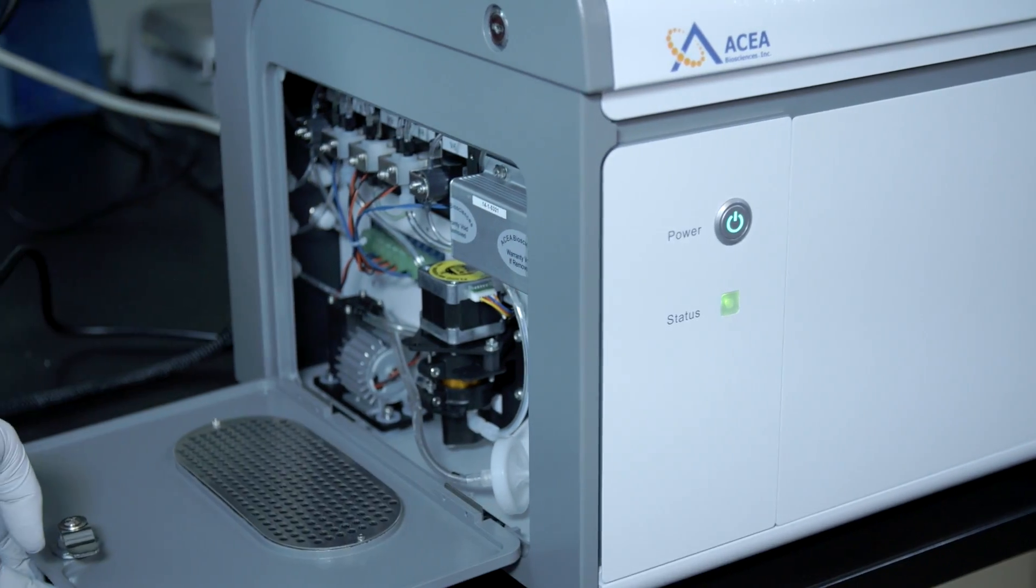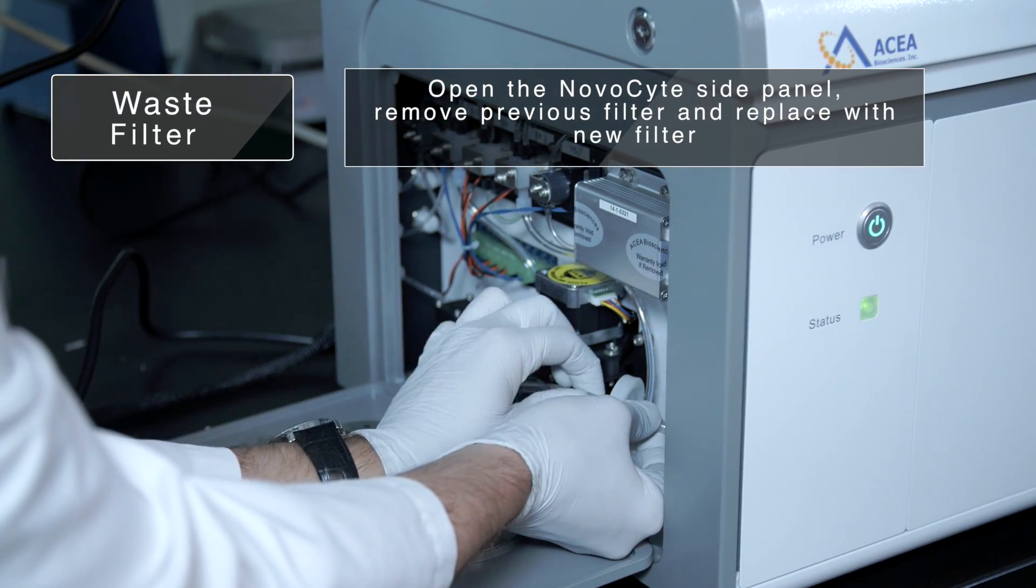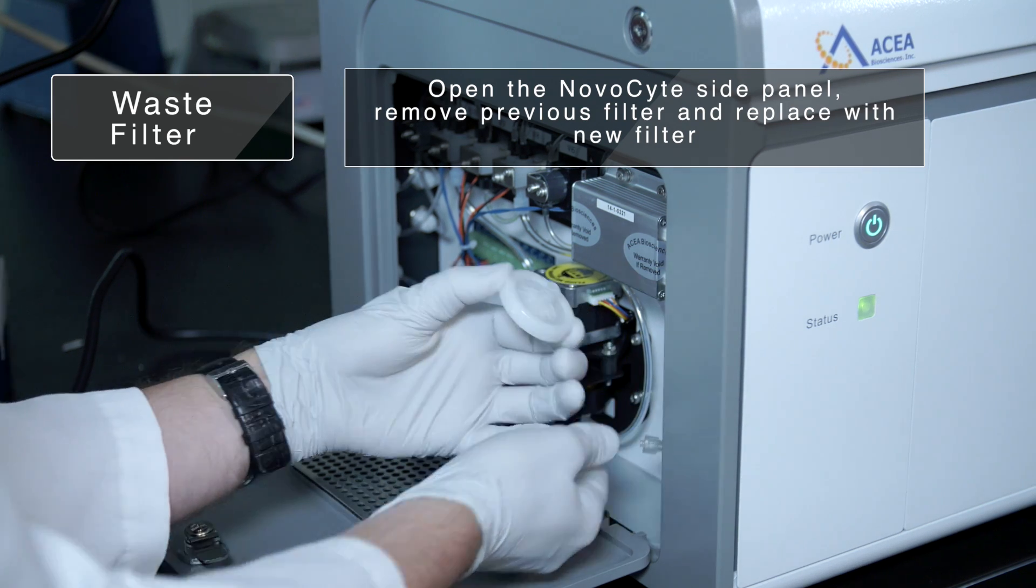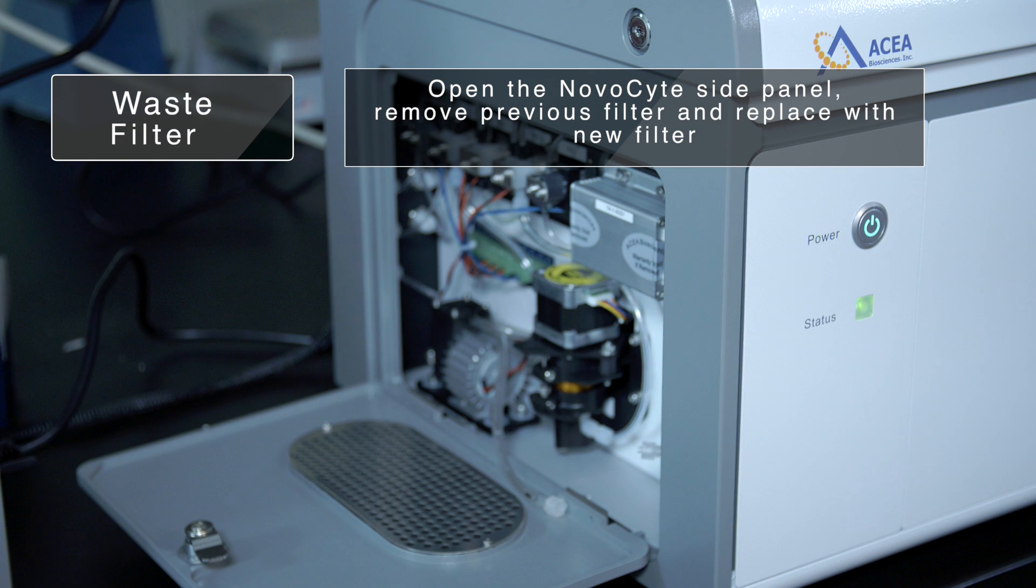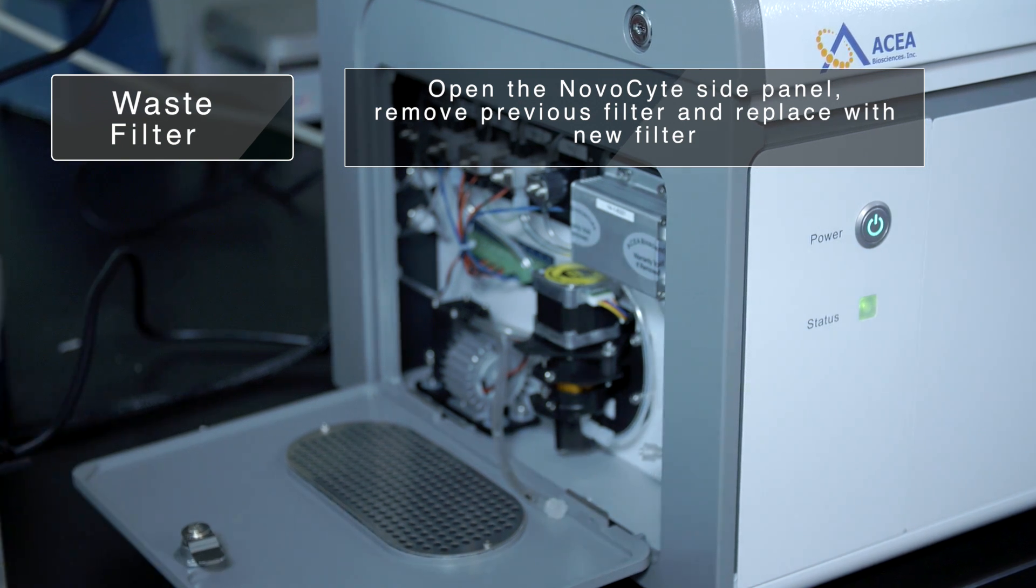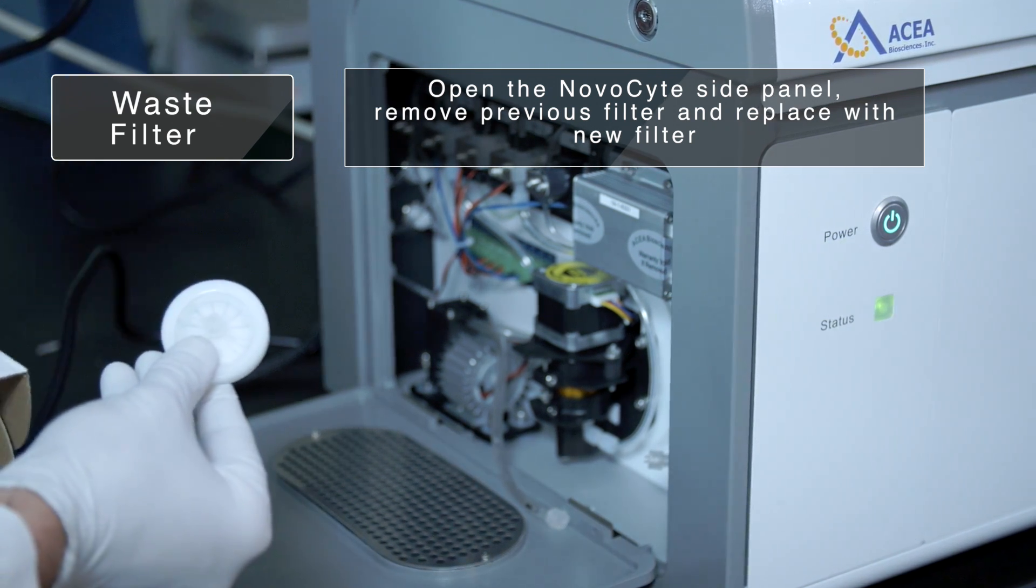For the waste filter, disconnect the two tubes on either side of the filter. Make sure the filter is oriented in the correct direction and reconnect the tubing.